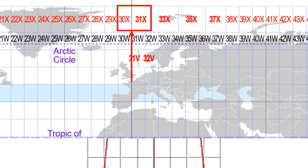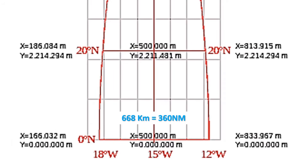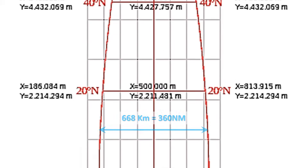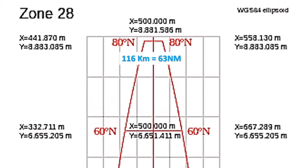Zone boundaries are not straight lines — they follow the converging longitudinal lines. The spatial distance between a zone boundary varies from the equator as you go North or South. The width of a zone at the equator is 667,935 meters, or about 668 kilometers, or 360 nautical miles. At about 80 degrees North latitude, the width of a zone is about 116,260 meters, or about 116 kilometers, or 63 nautical miles.